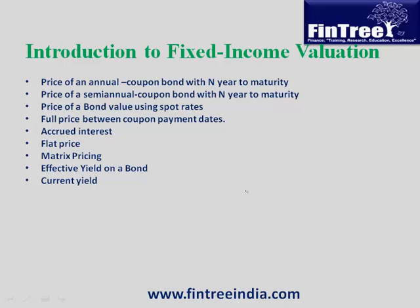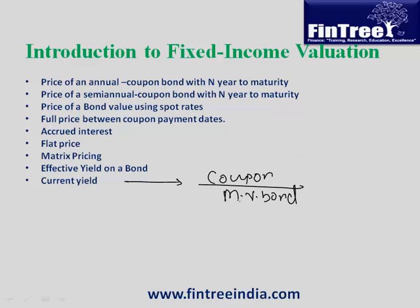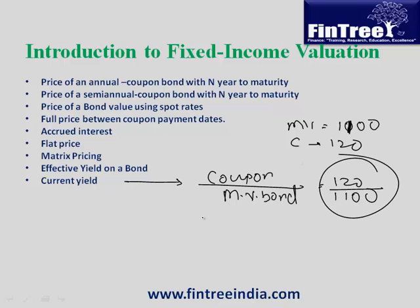Current yield is straightforward: it's the coupon received on a bond divided by the market value of that bond. For example, if the market value is 1100 and the coupon received during the year is 120, then current yield = 120 / 1100.